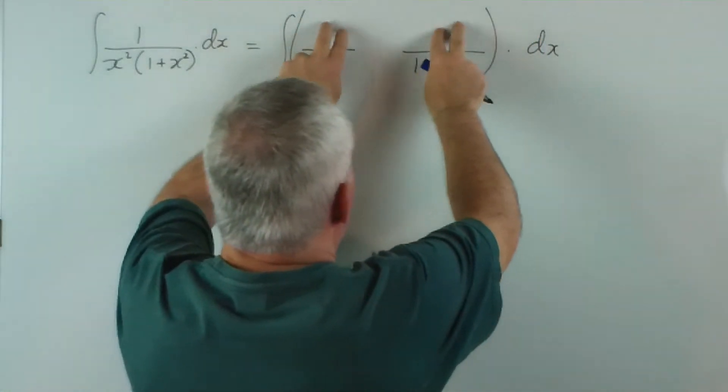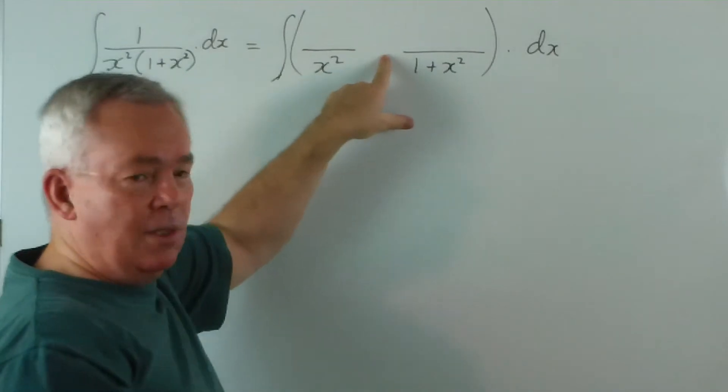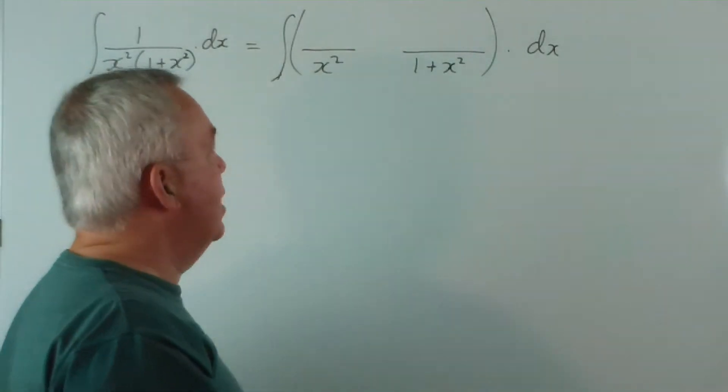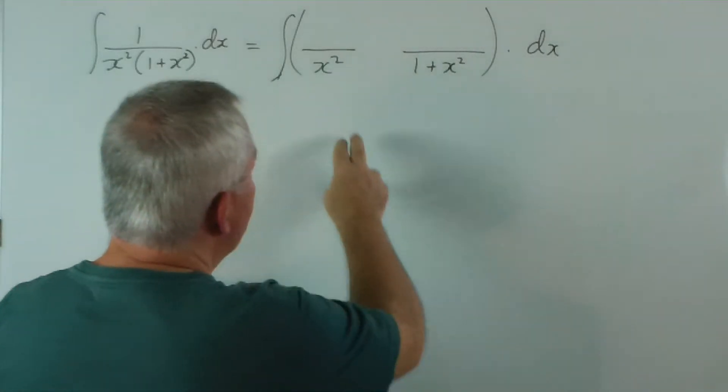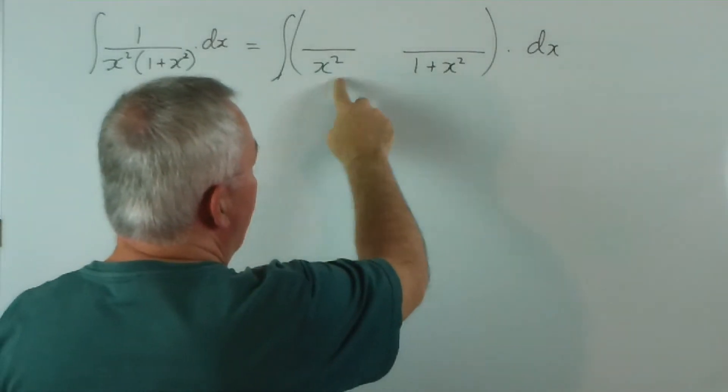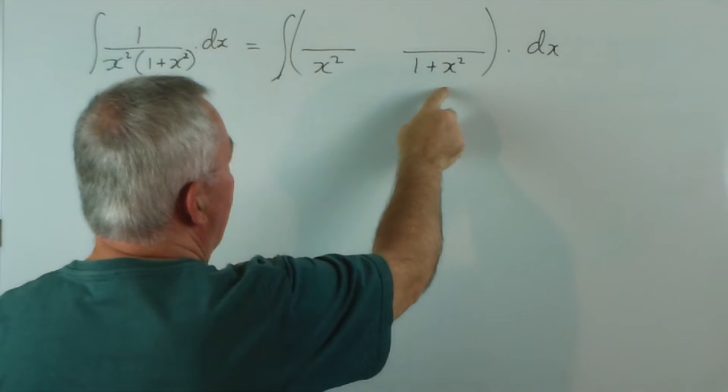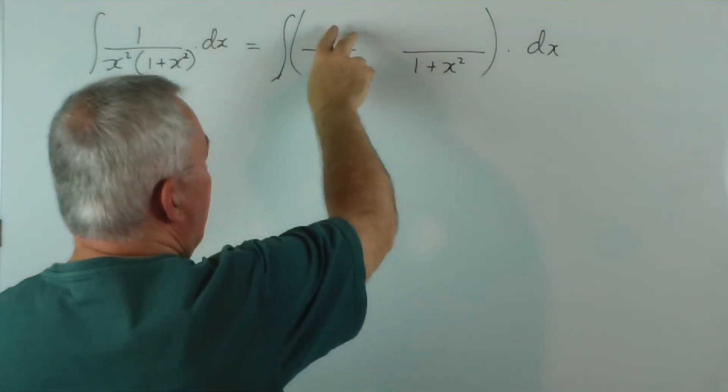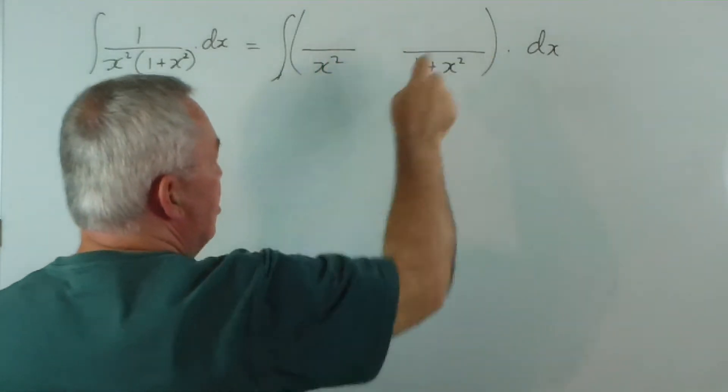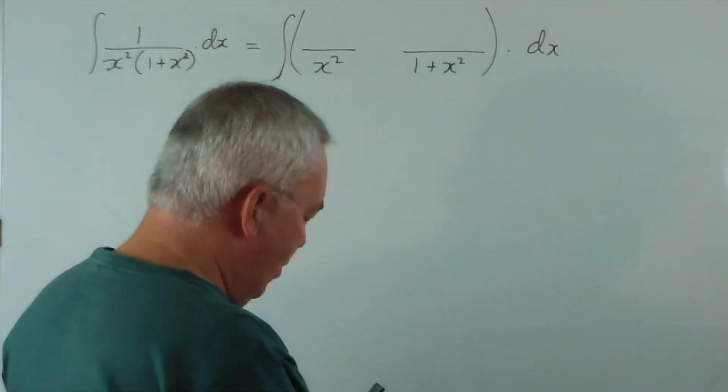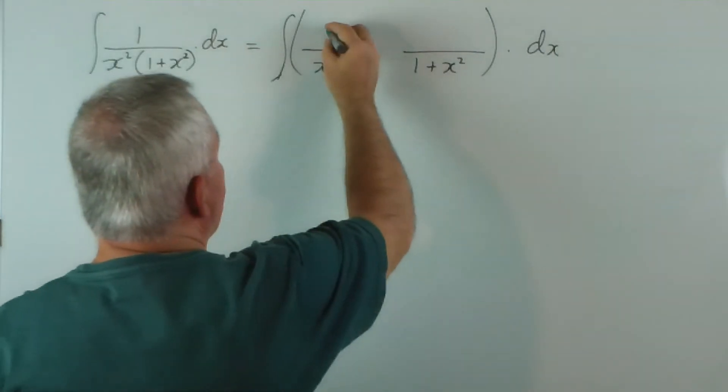So what numbers are we going to put here? Notice I didn't write the sign yet, just don't know. Well, I notice that there's no x term in either of these. And we would traditionally put a polynomial of one order less here, but since there are no x's, I'm just going to put a constant.